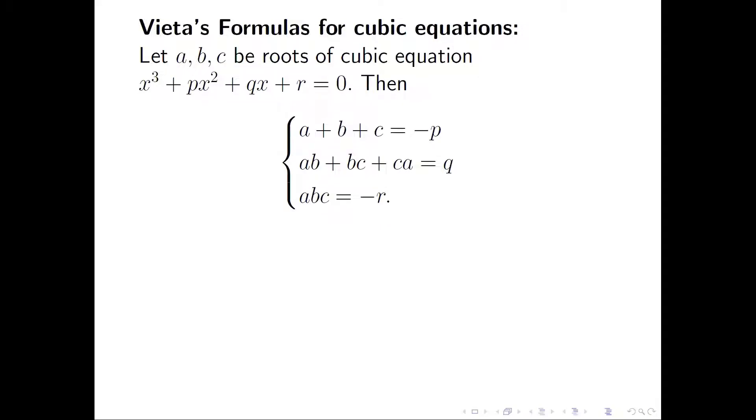We start with a brief discussion of Vieta's formulas for cubic equations. Let A, B, C be the roots of the cubic equation x³ + px² + qx + r = 0. Then the sum of the three roots A + B + C equals negative p. AB + BC + CA equals q, and the product ABC equals negative r.